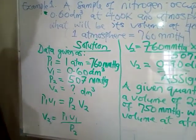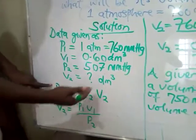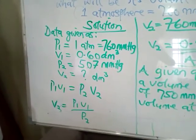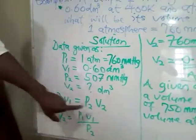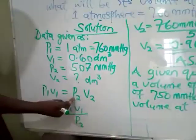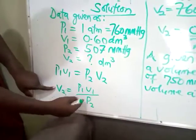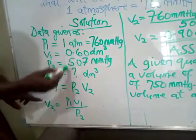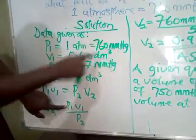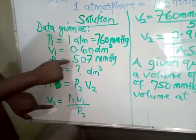At this juncture we apply the formula: P1V1 = P2V2. Since we want to calculate the final volume V2, we divide both sides by P2, giving V2 = P1V1 / P2. We then insert the values: P1 = 760 mmHg, V1 = 0.60 dm³, and P2 = 507 mmHg.